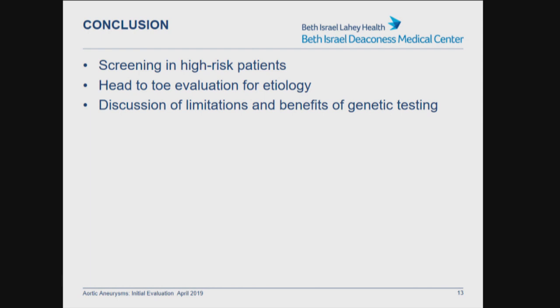In conclusion, it's important to screen patients who are high risk — particularly those covered under Medicare for AAAs and others with associated syndromes with a high prevalence of aneurysm. A head-to-toe evaluation for the underlying etiology should be performed when you first see a patient, and the limitations and benefits of genetic testing should be discussed. We'll discuss further management in subsequent presentations.